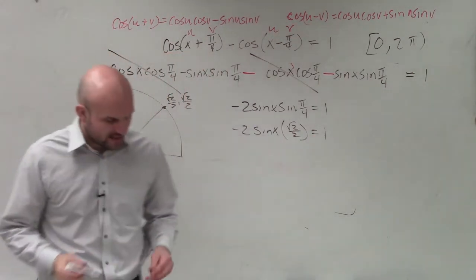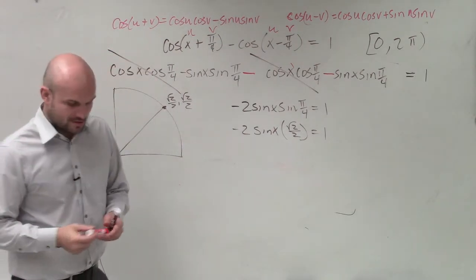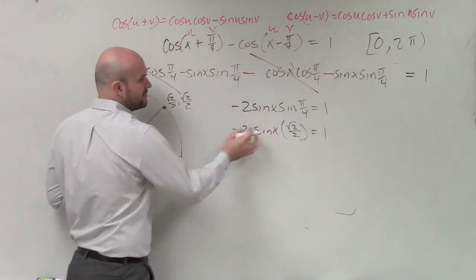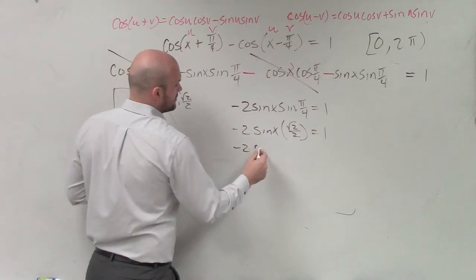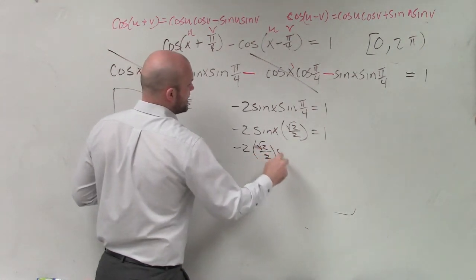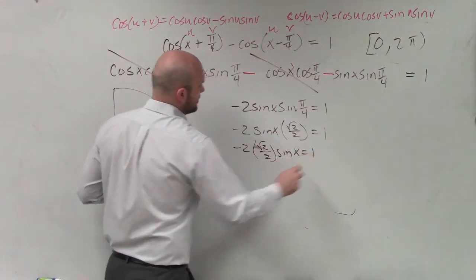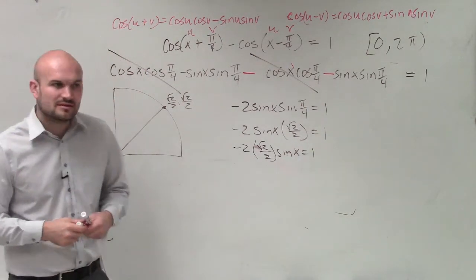So I have negative 2 times the sine of x times the square root of 2 over 2 equals 1. Now, if you don't see why these multiply out, partially the reason is because you could be not seeing. But we can rewrite this. Let me still use brown. I could rewrite this as negative 2 times the square root of 2 over 2 times the sine of x equals 1. Now, that might be a little bit easier for you guys to see. That doesn't really matter.